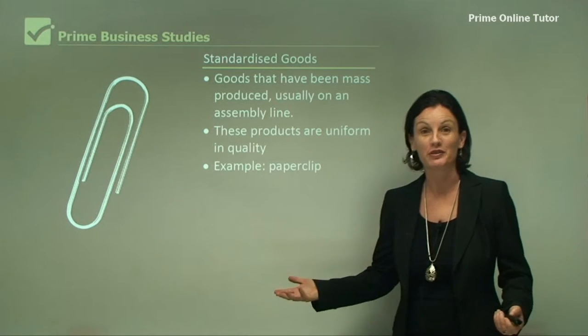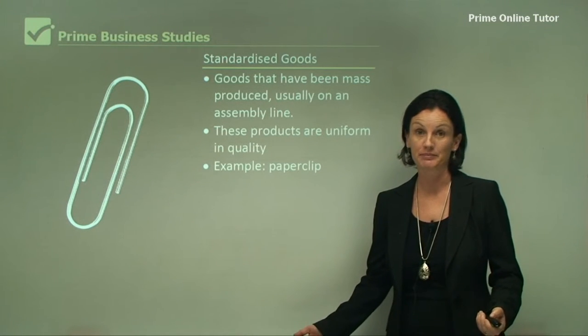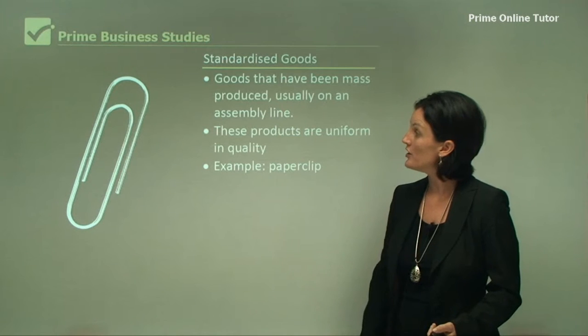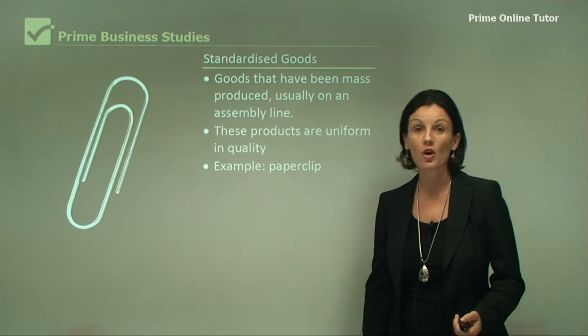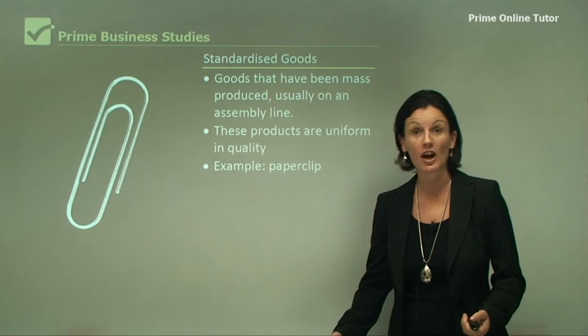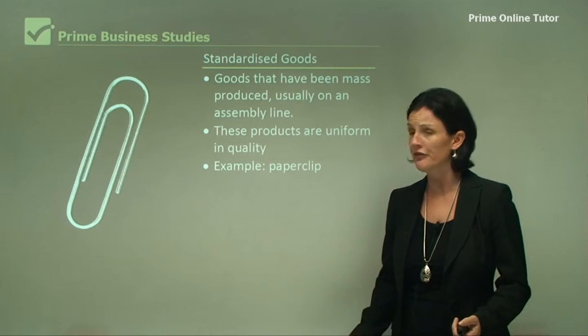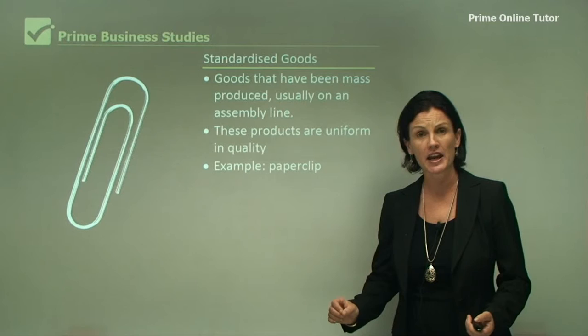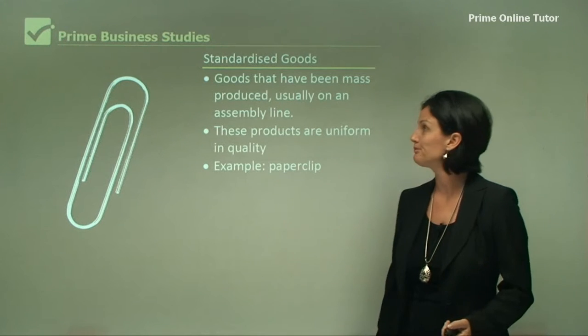A very good example of this is a paperclip. The business is able to produce this on mass on an assembly line very quickly, and it's the same every time.